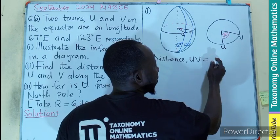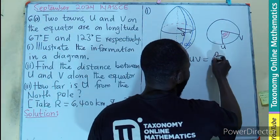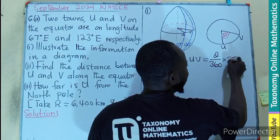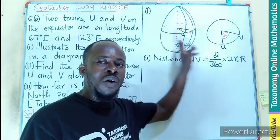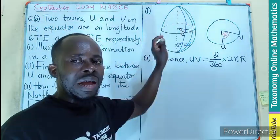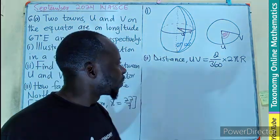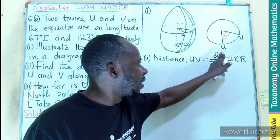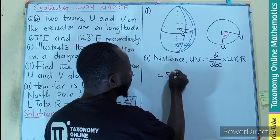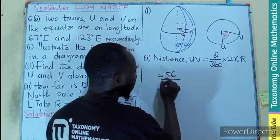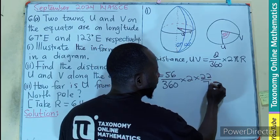So distance UV will become the angle formed at the center. Let's just make it theta over 360 times 2 pi R. Here we are using the capital R because that is the center of the Earth. The equator formed the center for a circle with the center being the center of the Earth. So we have been given this angle suspended by the line. So we just go straight forward and have our 56 degrees divided by 360 times 2, 22 over 7,